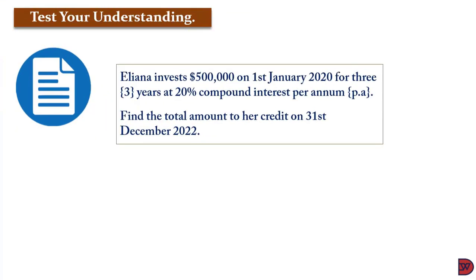Let's test our understanding. Eliana invests $500,000 on 1st January 2020 for three years at 20% compound interest per annum. Find the total amount to her credit on 31st December 2022.